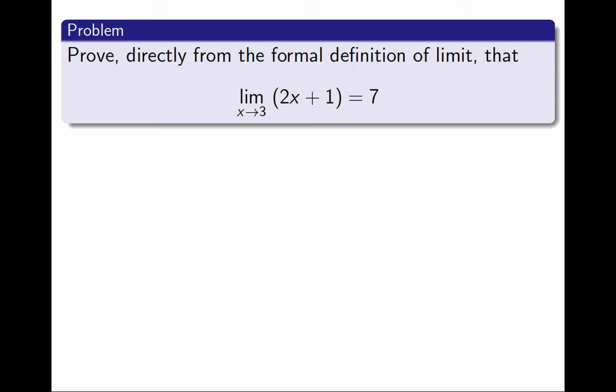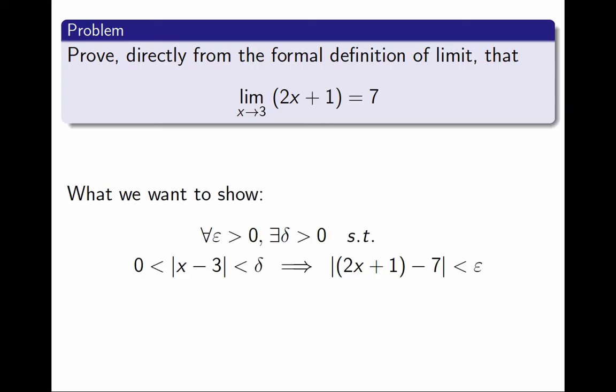So let's begin by recalling that definition of limit. I need to show that for every positive ε, there exists a positive δ such that, if the distance between x and 3 is between 0 and δ, then the distance between 2x plus 1 and 7 is smaller than ε.